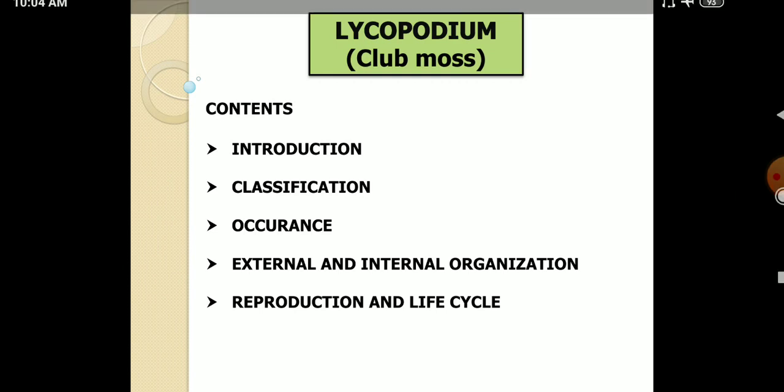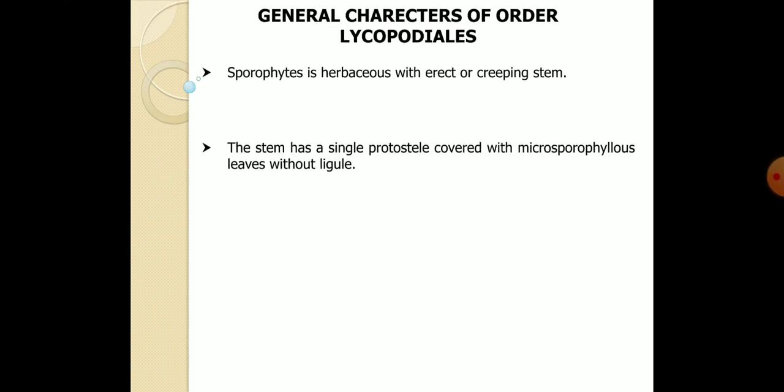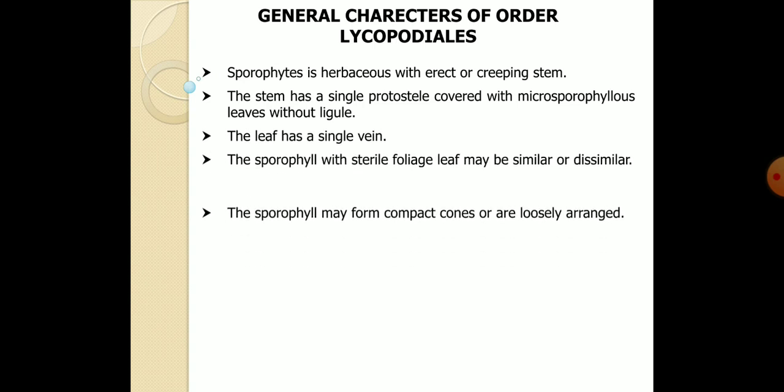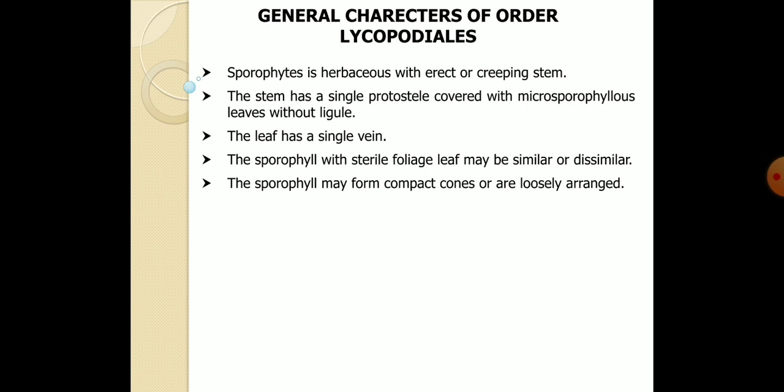Lycopodium commonly grows in moist, shady places. Coming to the general characteristics of Lycopodium: the sporophyte, that is the plant body, is herbaceous, erect, or sometimes creeping. The stem has a single protostele covered with microsporophyllous leaves. In Lycopodium, microsporophyllous means these are small leafy-like structures present on the main stem. The leaf has a single vein.